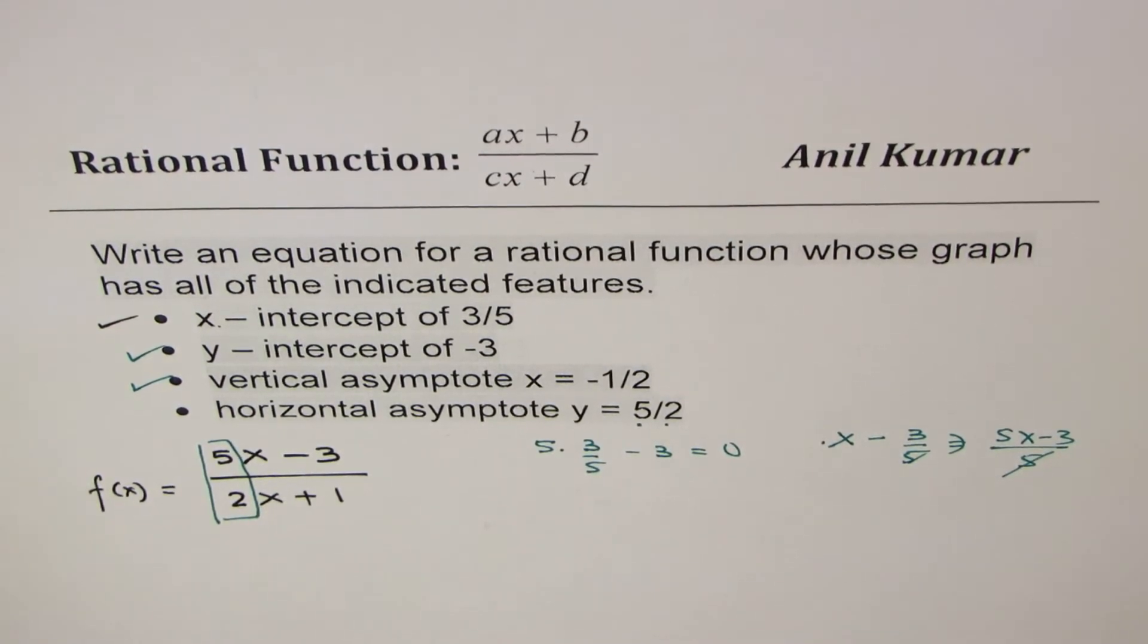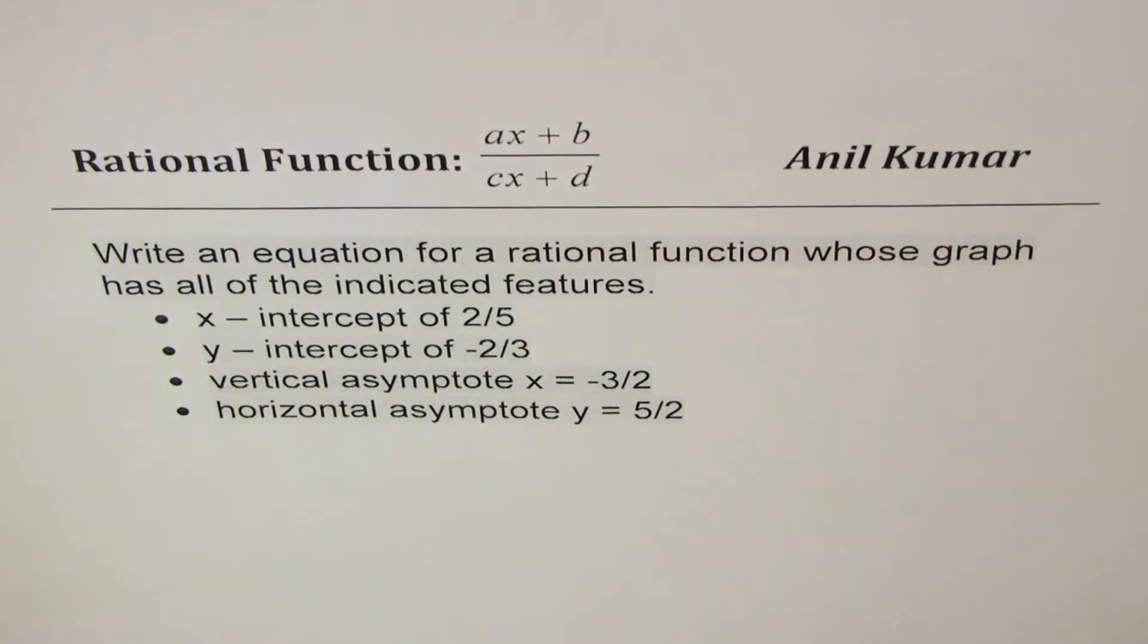So just by checking your x-intercepts and vertical asymptotes, most of the time, you will get your equation. So let's do it once again.